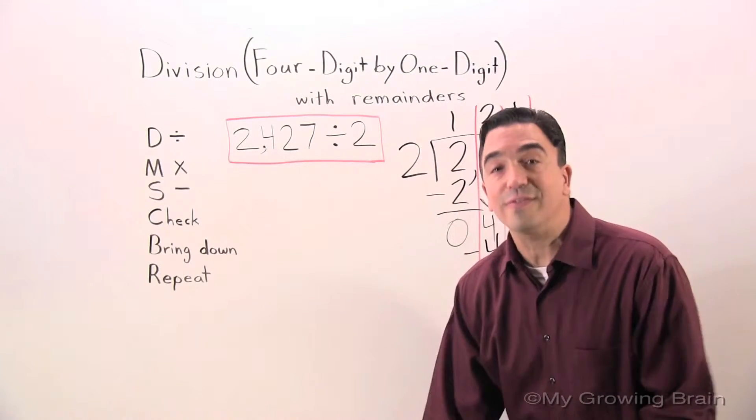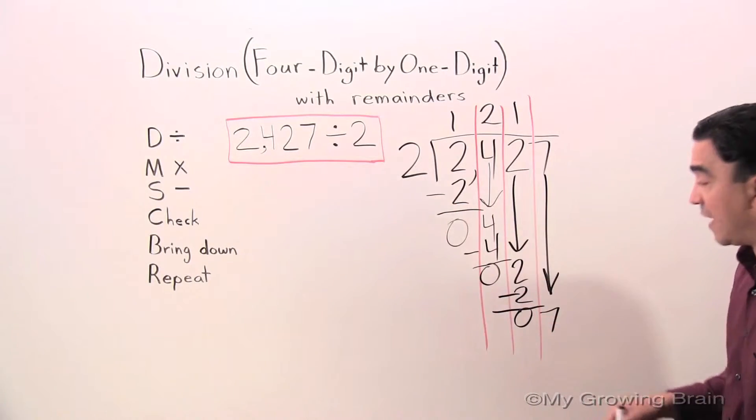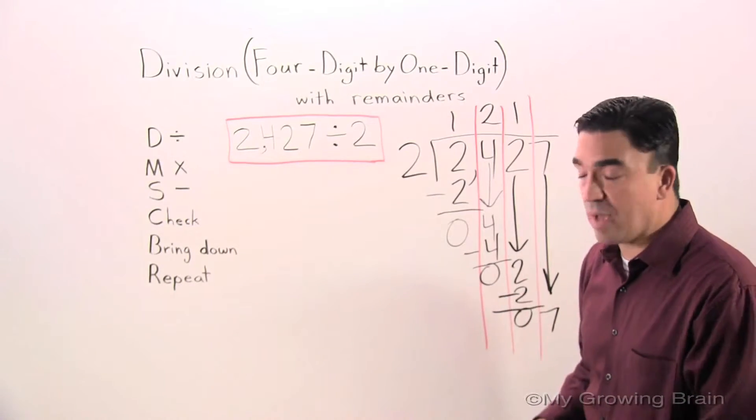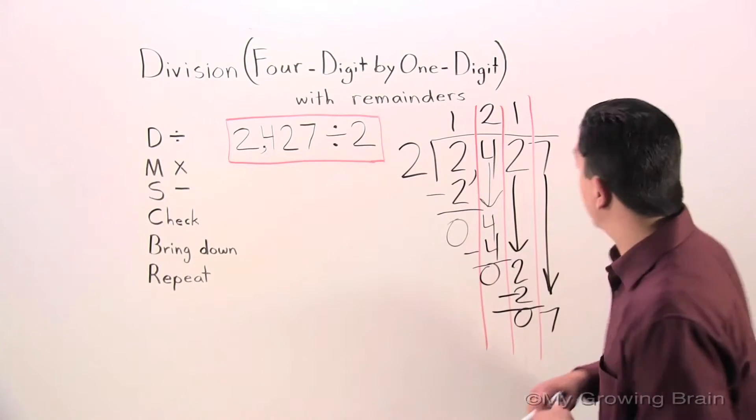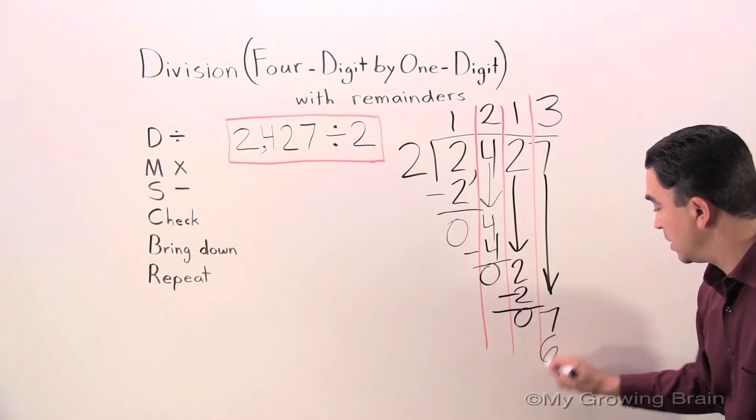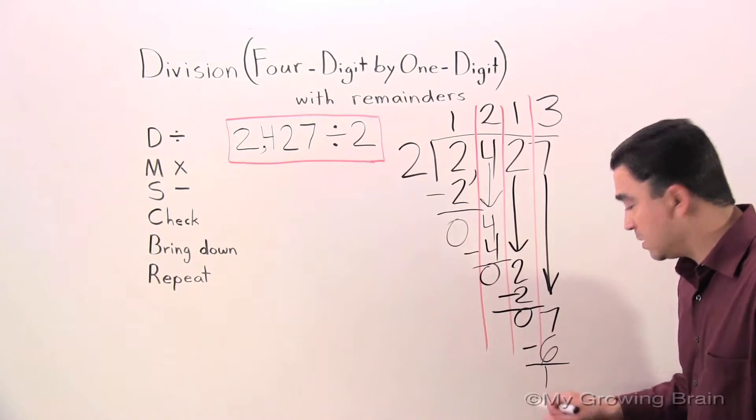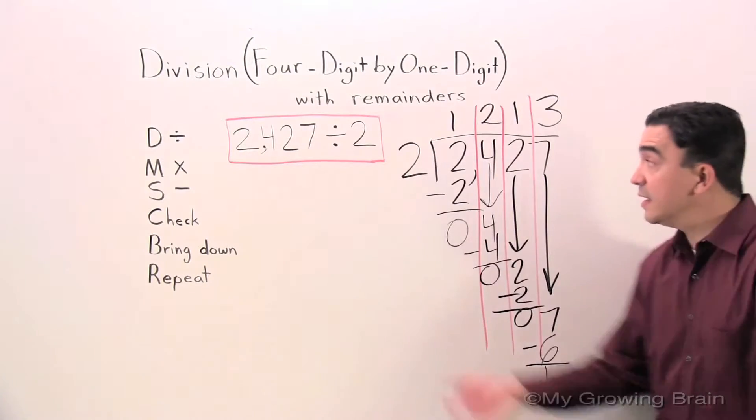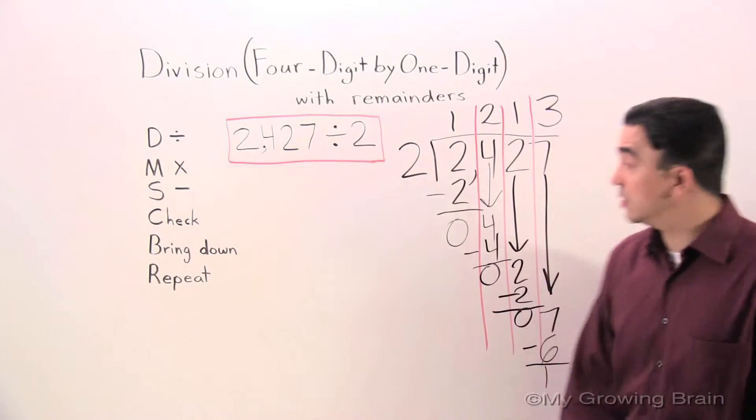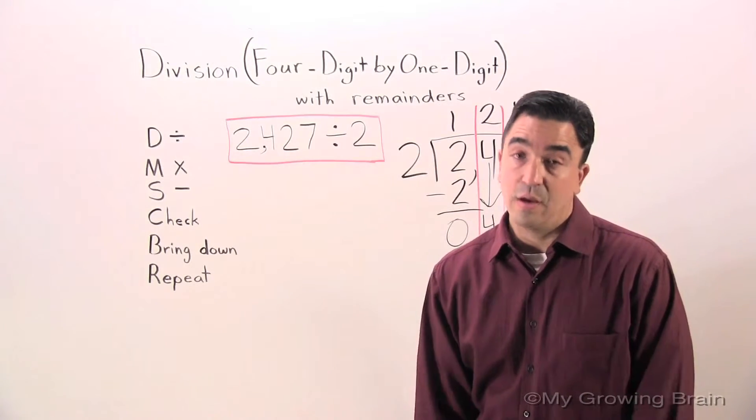Repeat the step. Back to the dividing. 2 goes into 7, or 7 divided by 2. 2, 4, 6, 8. Too much. 2, 4, 6. 3. Multiply. 2 times 3? 6. Subtract. 1. 1 is less than 2, because we have to check. 1 is less than the divisor. Bring down. There's nothing to bring down. We're done.